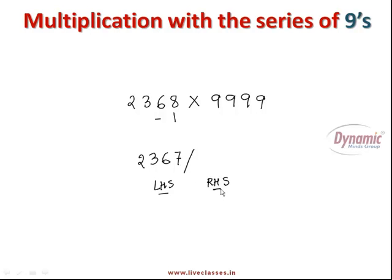And for the right hand side answer, what you have to do? Just subtract these numbers from 9's. 9 minus 2 gives you 7, 9 minus 3 gives you 6, 9 minus 6 gives you 3, and 9 minus 7 gives you 2. So the complete answer is 23677632. So this is the complete answer of this big multiplication. Isn't it very easy?